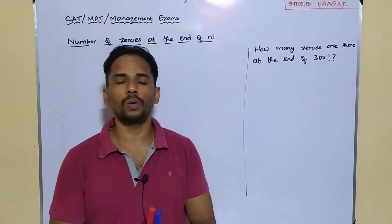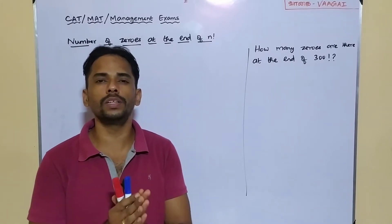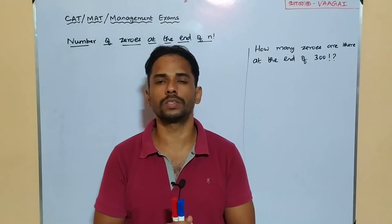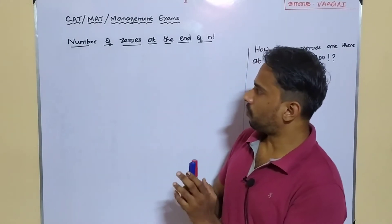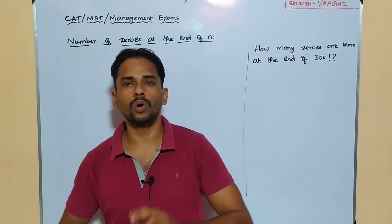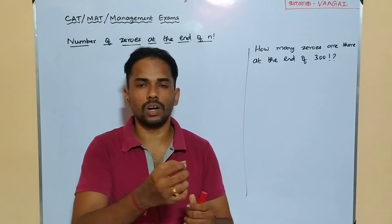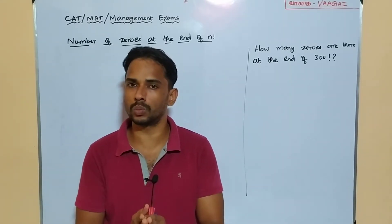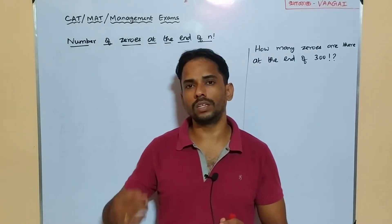Hi and hello dear friends. Welcome back once again to our channel Vagey Academy of Mathematics. This playlist is where you can find video lessons for CAT, MAT and other management exams. So in this session, we are going to find out the number of zeros at the end of any given n factorial. If you are given a value of n, we'll determine how many zeros that n factorial's value is going to end up with. This is what we are going to see here in this session.